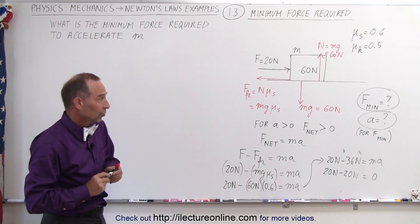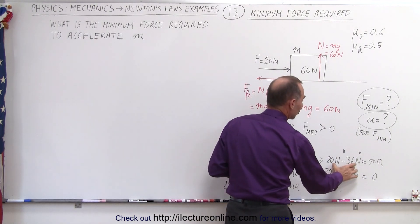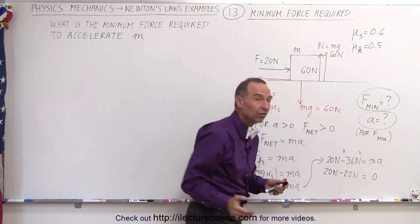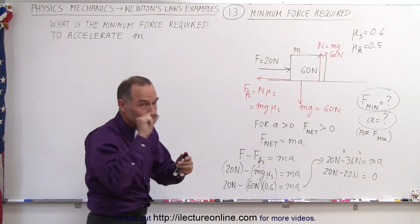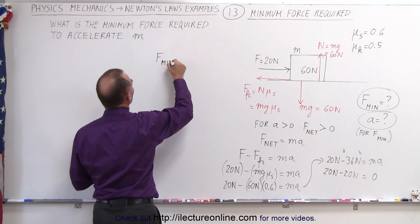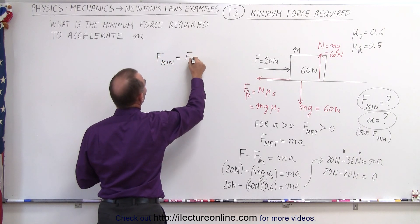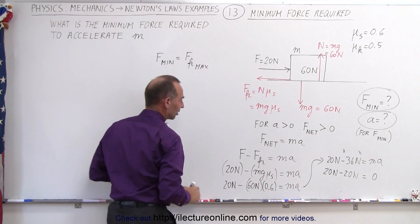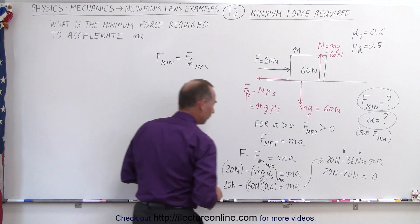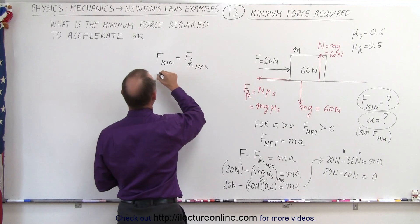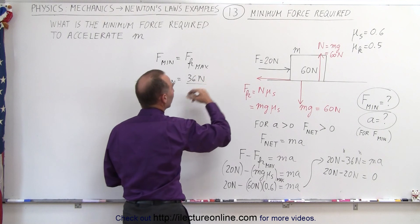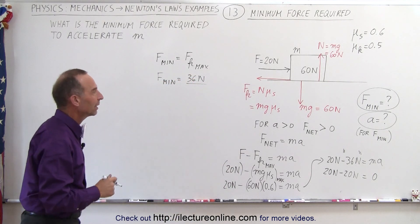Now we have the answer to our second question: what is the minimum force required to overcome friction? Since the maximum force of friction is 36 Newtons, the minimum force to apply would be 36 Newtons plus a tiny bit to get it going. So F_min required equals F_friction_max — F_min must be at least 36 Newtons to overcome the friction force, and then the object will begin to accelerate.